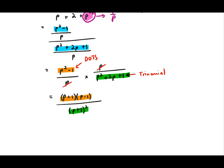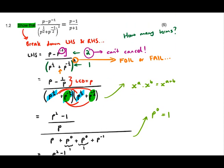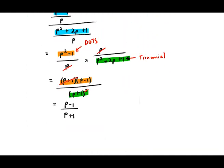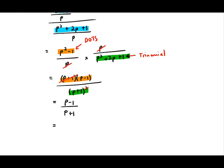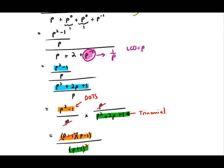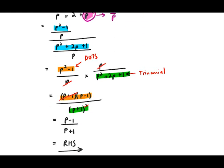The (p+1) squared cancels with one (p+1), leaving p minus one over p plus one — which is exactly the right-hand side. So we can write 'equals right-hand side' and that is your answer. It's a tough six-mark question, but I simply applied distribution when foiling the bracket, used rational exponents and lowest common denominators, and then used basic Grade 10 factorization to get the final answer.